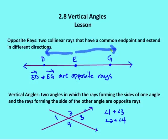Vertical angles use the concept of opposite rays as part of their definition. Vertical angles are two angles in which the rays forming the sides of one angle and the rays forming the sides of the other angle are opposite rays. Here I have one pair of opposite rays, and then I have another pair of opposite rays. So based on this definition, angles one and three are vertical angles, and angles two and four are vertical angles.